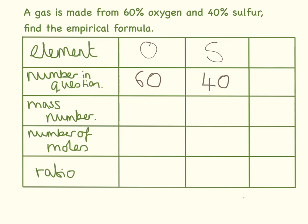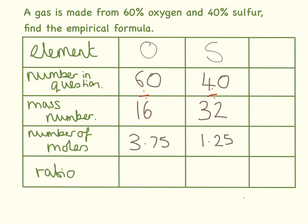Write down the mass number from the periodic table — the mass number is the larger of the two. For oxygen that is 16 and for sulfur that is 32. To find the number of moles we divide the number in the question by the mass number. So that's 60 divided by 16 equals 3.75, and 40 divided by 32 equals 1.25.